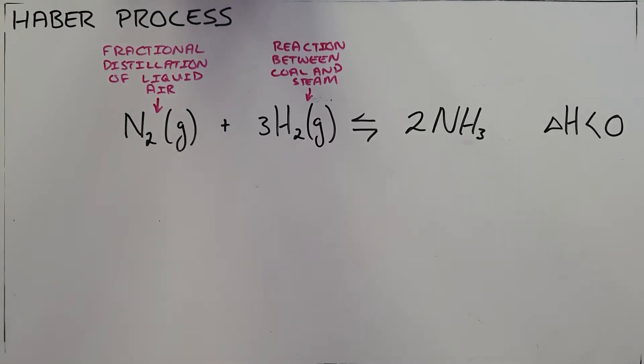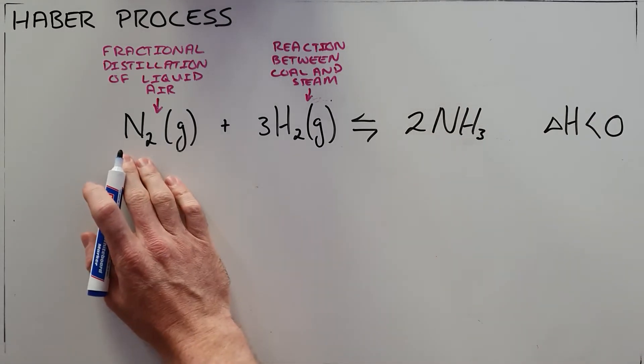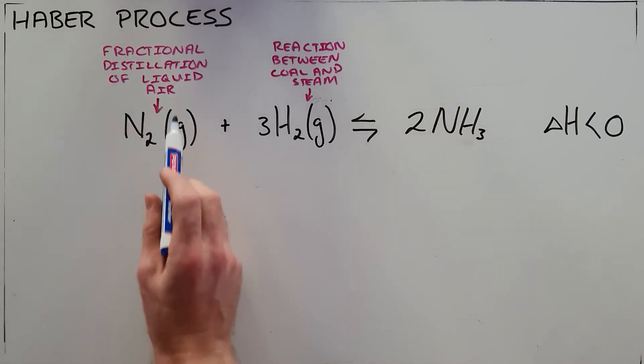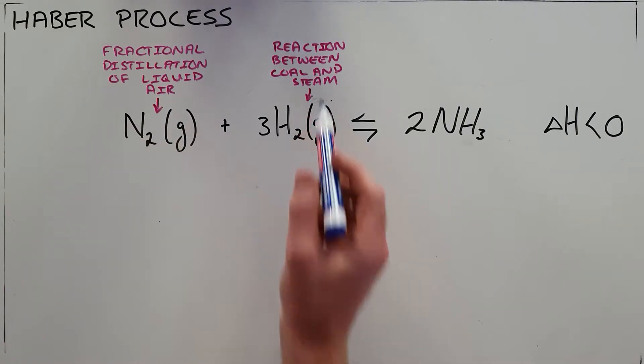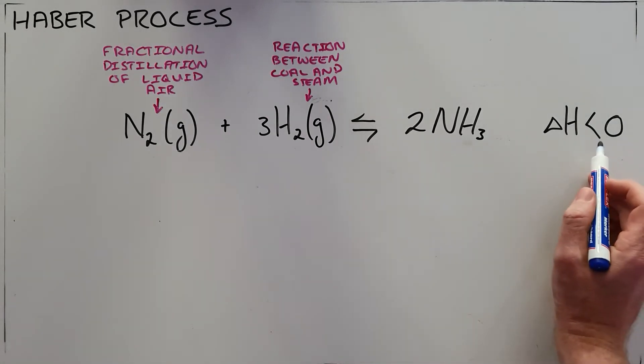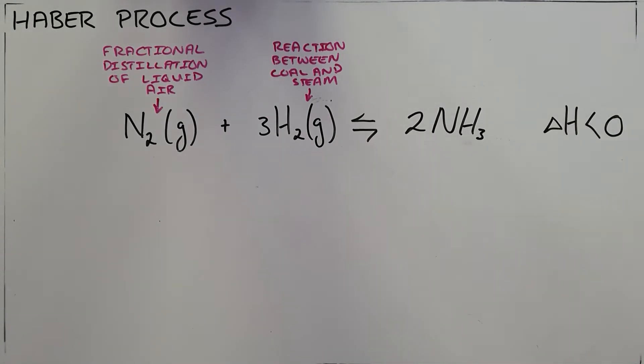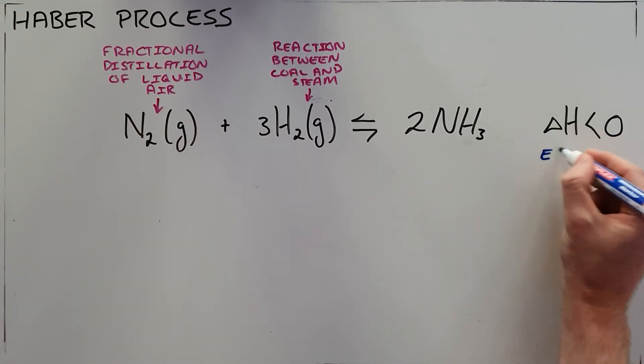The Haber process is the process required to produce ammonia by combining nitrogen obtained from fractional distillation of liquid air with hydrogen obtained from a reaction between coal and steam. This reaction has a negative enthalpy change, which means it is exothermic.